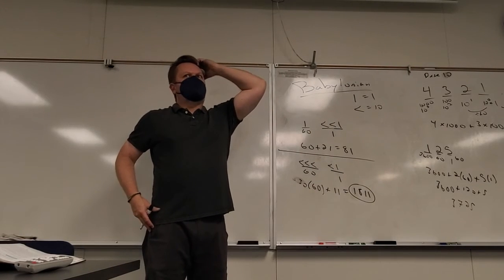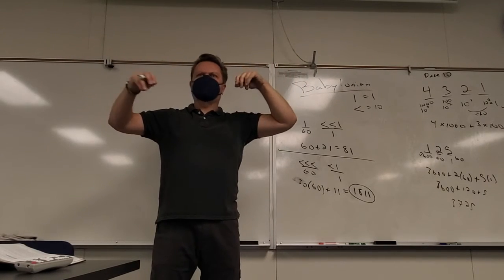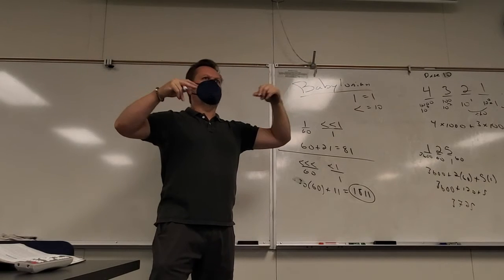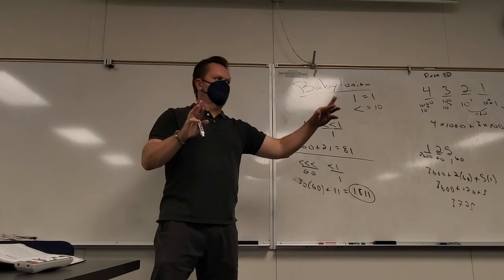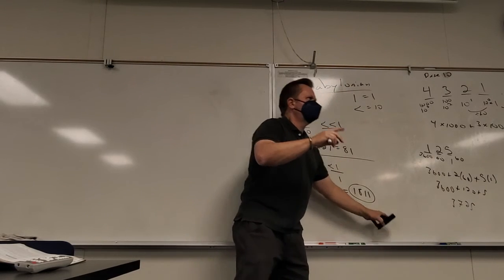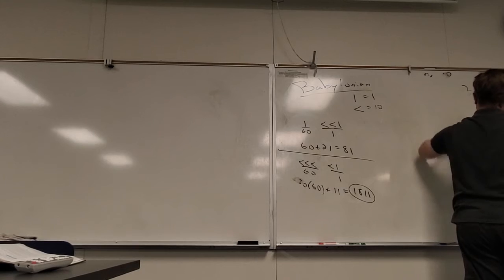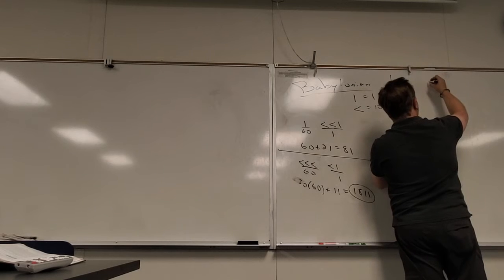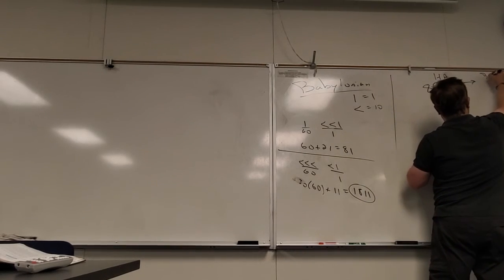For us, we can only put a single digit. For them, they could put a whole bunch of things. So this is the ones place, this of course is in the 60s place. So I have how many 60s? One. And how many ones? 21. So this would be 81. That's trippy. It is trippy.